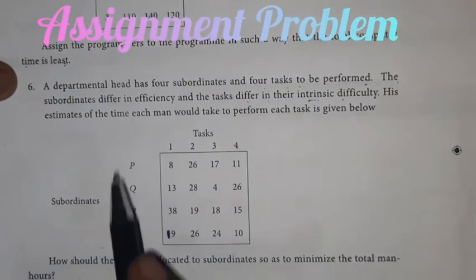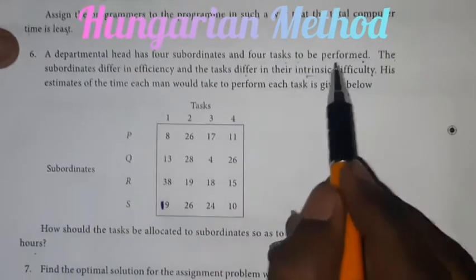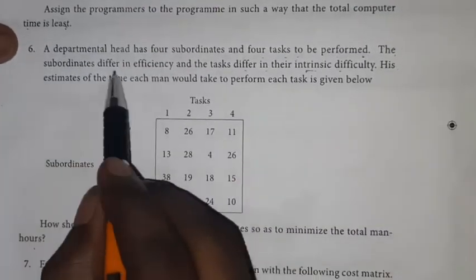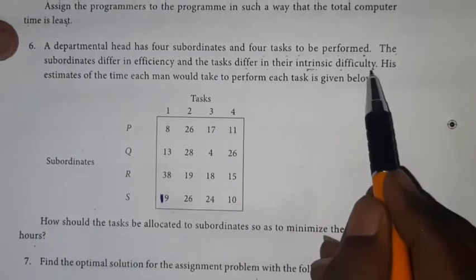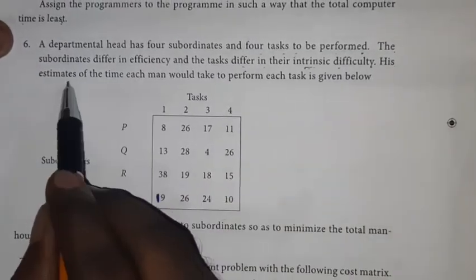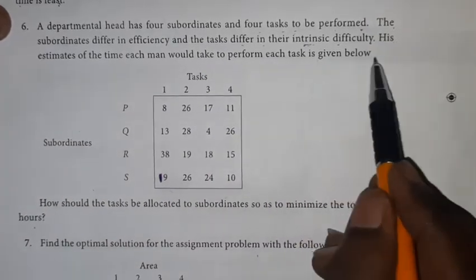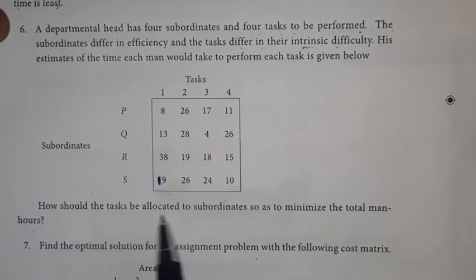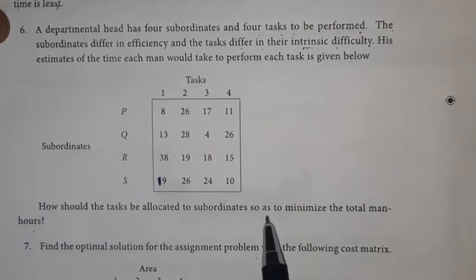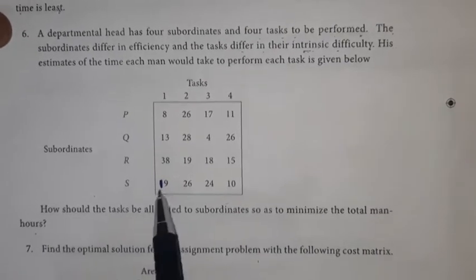Hello students, so in this problem a department head has four subordinates and four tasks to be performed. The subordinates differ in efficiency and the tasks differ in their intrinsic difficulties. The estimate of time each man would take to perform each task is given below. So how should the tasks be allocated to subordinates so as to minimize the total man-hours?